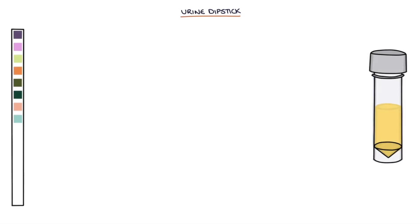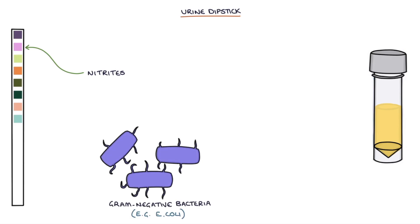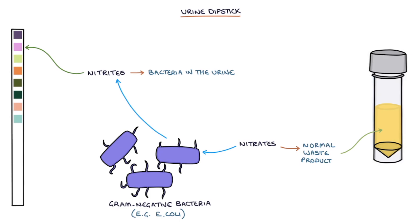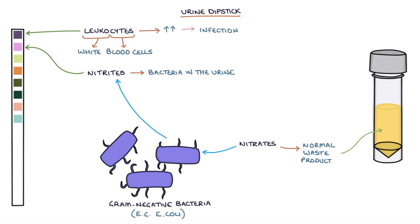On a urine dipstick, you can test for nitrites. Gram-negative bacteria such as E. coli break down nitrates, which are a normal waste product in urine, into nitrites. The presence of nitrites suggests bacteria in the urine. You can also test for leukocytes, which are white blood cells. It's normal to have a small number of leukocytes in the urine, but a significant rise can result from an infection or other causes of inflammation. Leukocyte esterase is what's tested on a urine dipstick, and this is a product of leukocytes and indicates the number of leukocytes in the urine.